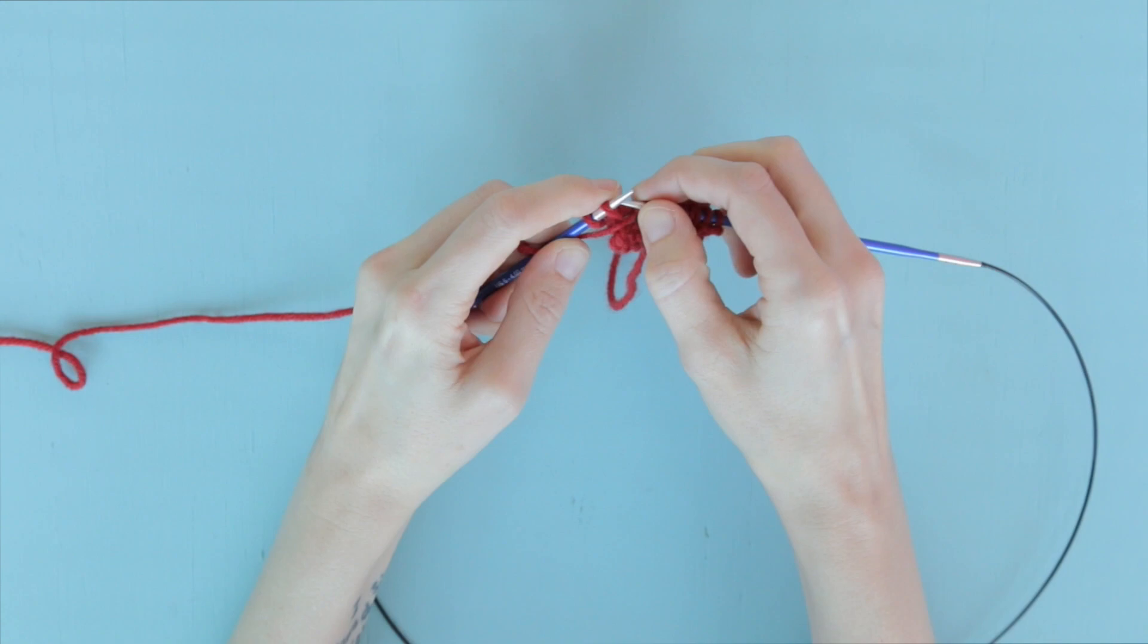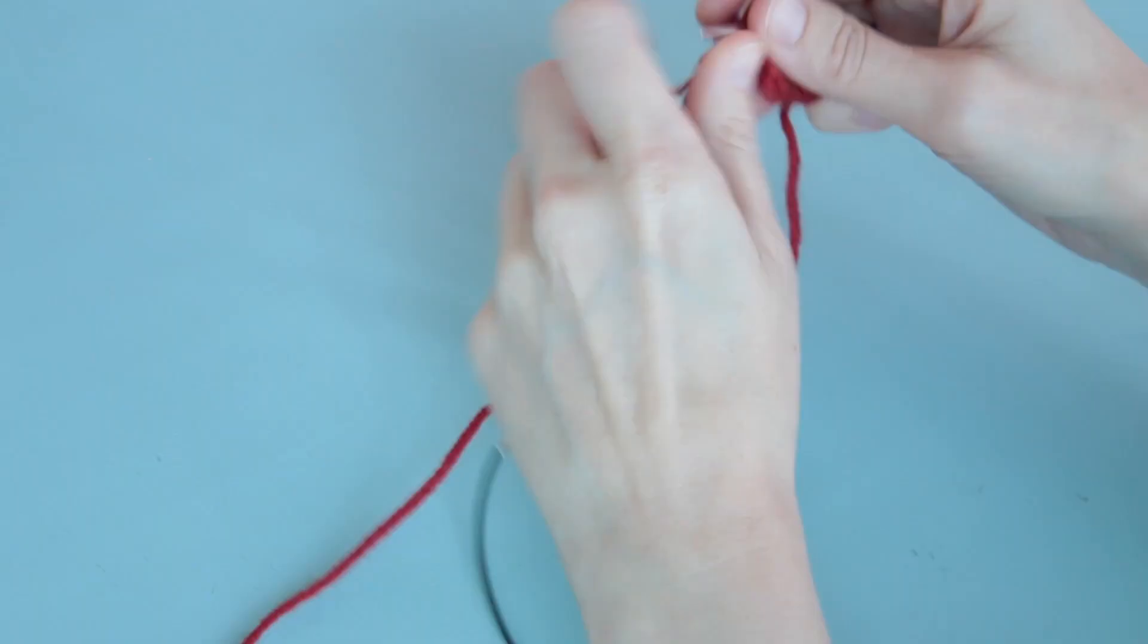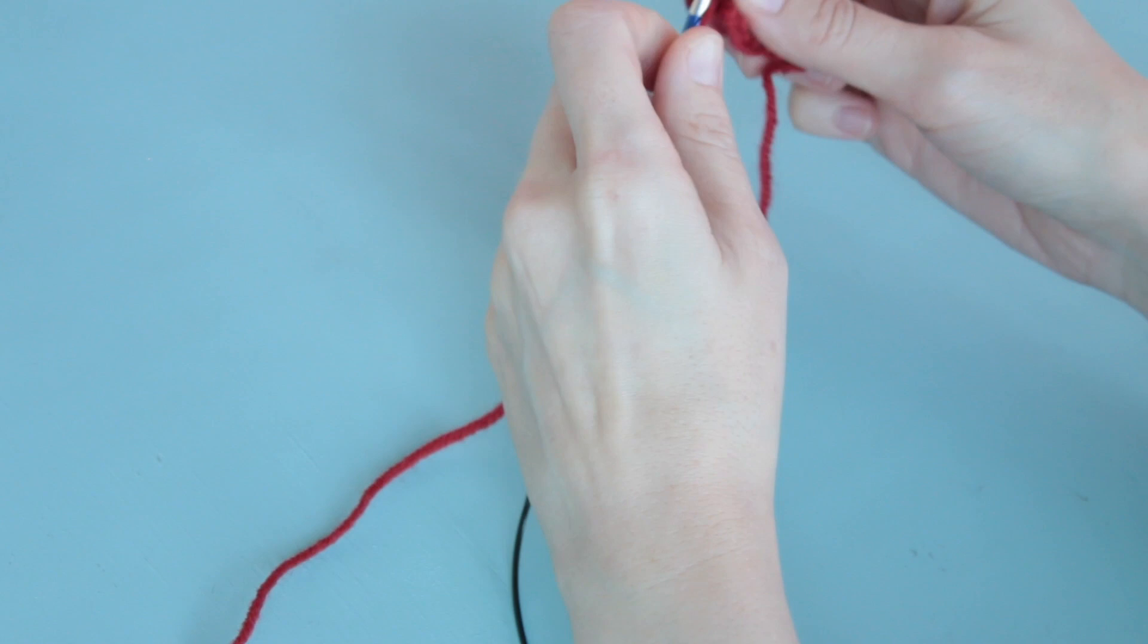And then you end out the row with two simple, plain, one-wrap purl stitches. And you'll see in a second why.